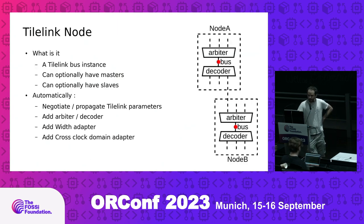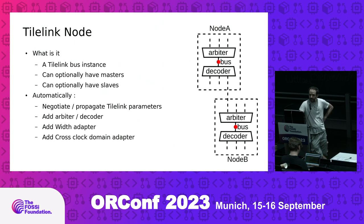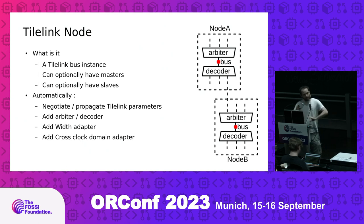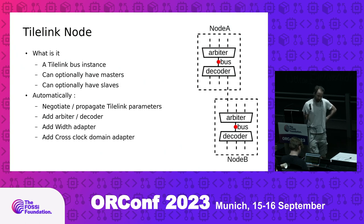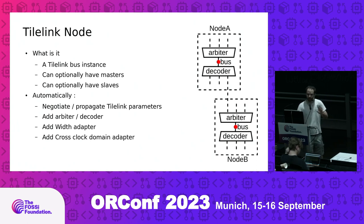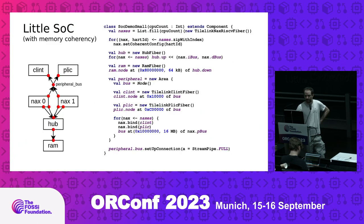Going back to TileLink and the implementation in Spinal HDL: the idea is that you have those nodes. You can connect multiple masters and multiple slaves to each node. It will automatically propagate parameters through, and may mutate parameters if required. It will add the required arbiter and decoder to handle all those connections. For instance, it will do some adaptations — like if there's a 64-bit bus connected to a 128-bit bus, it will insert a width adapter automatically. It will try to keep things functional, handle cross-clock domain crossings automatically, and all those sorts of things.